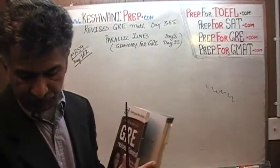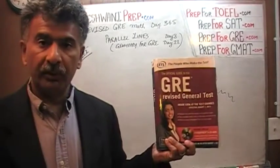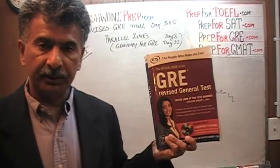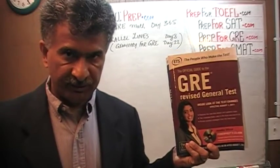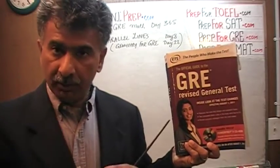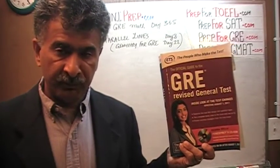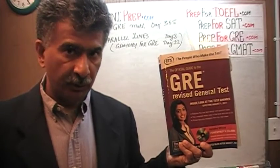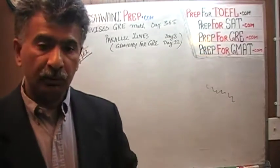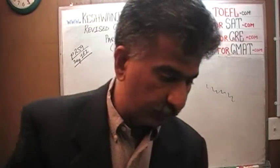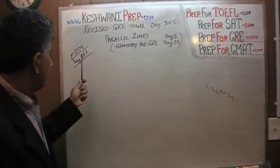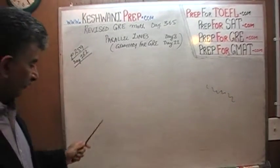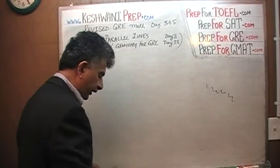The problems on page 259 are the exact same problems that appeared in the first edition of the revised GRE. We have already solved all the math problems from this book. If you are interested in watching the original solutions, you will find them on day number 162, 163, and 164. Let's take a look.